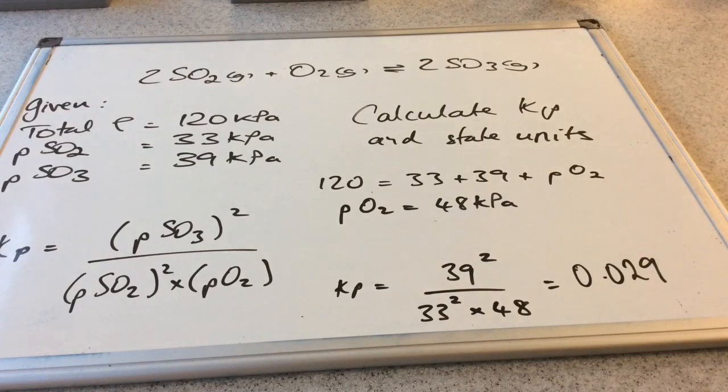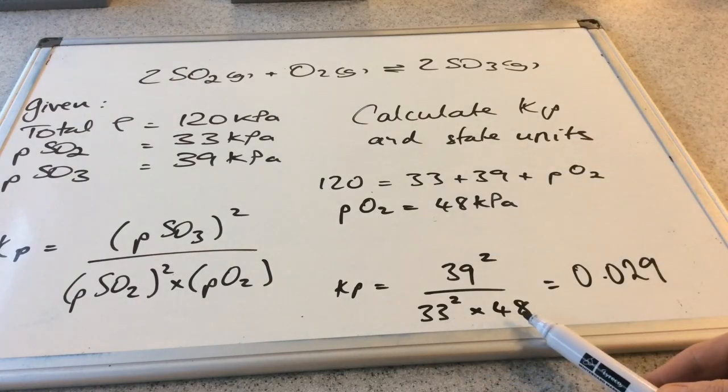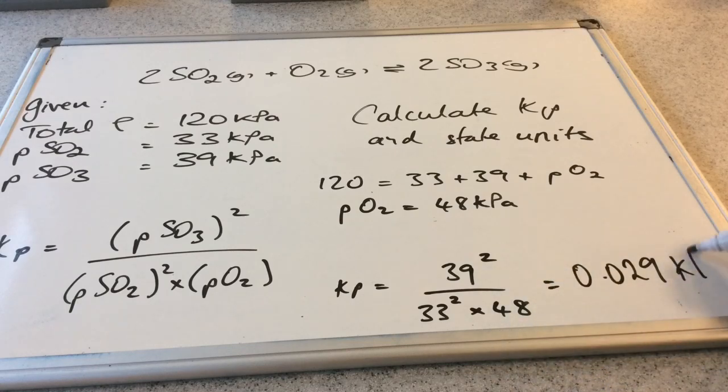So the units, we've got kilopascals squared on the top and kilopascals cubed on the bottom. And so we're going to be left with 1 over kilopascals. So it's kilopascals to the negative 1.